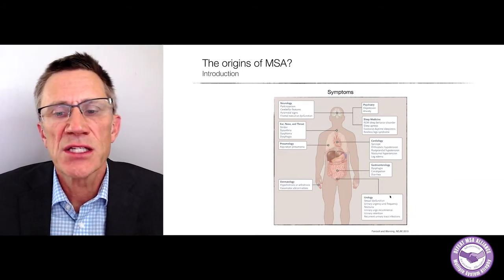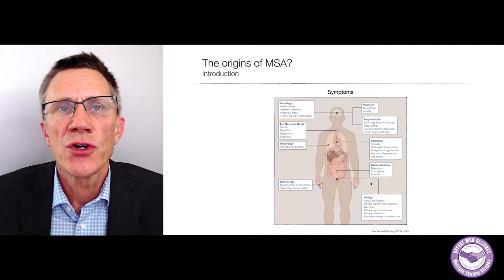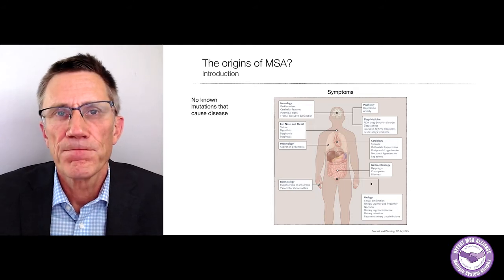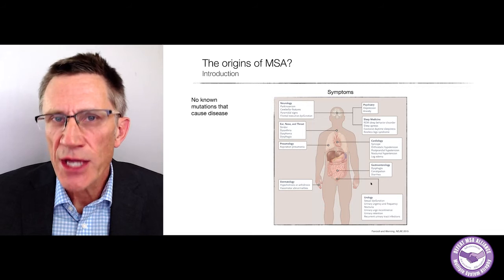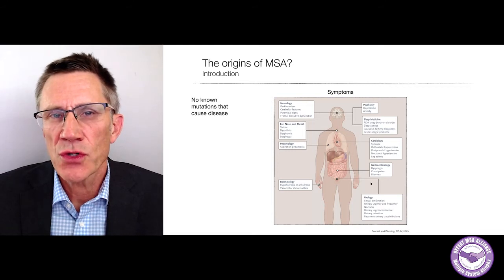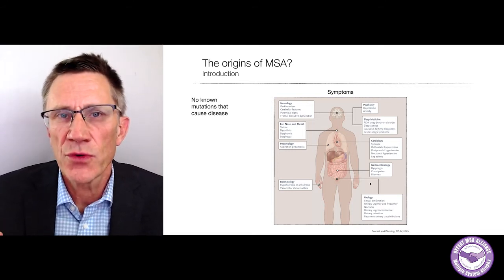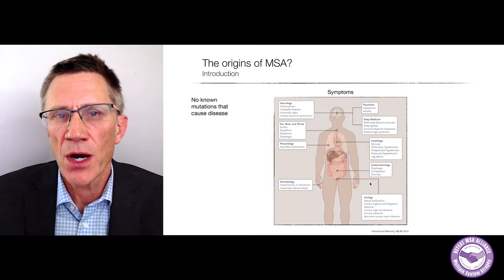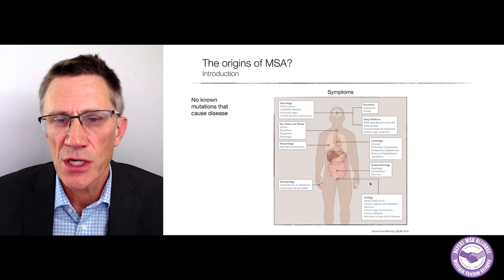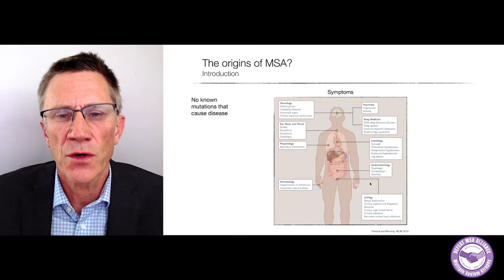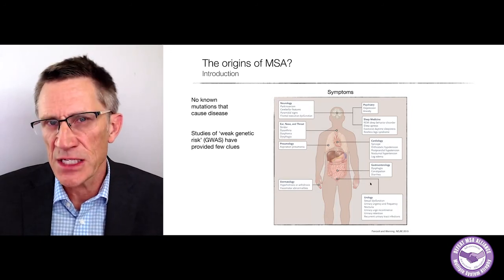There are also urogenital symptoms. There are no known mutations that cause MSA — that's different from Parkinson's, where some rare forms are coupled to mutations. So we don't get any clues from the genetics in that sense in MSA.